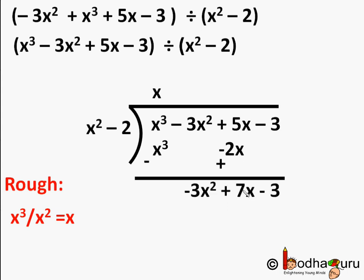Now we subtract: x cubed minus x cubed equals 0, and 5x plus 2x equals 7x. So minus 3x squared and minus 3 from the dividend come down, giving a remaining dividend of minus 3x squared plus 7x minus 3. Again we repeat the process — divide the highest degree of the remaining dividend by the highest degree of the divisor to get the next quotient term.